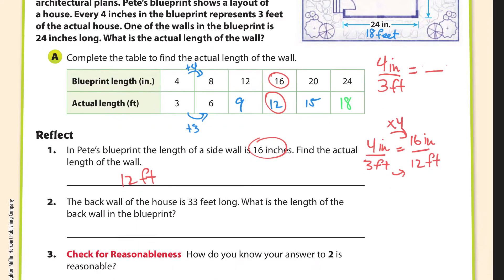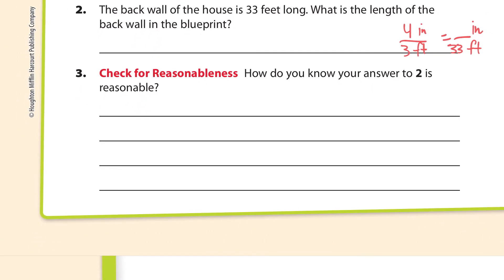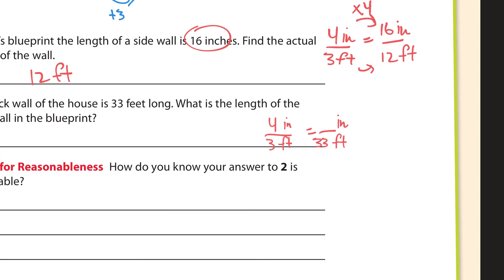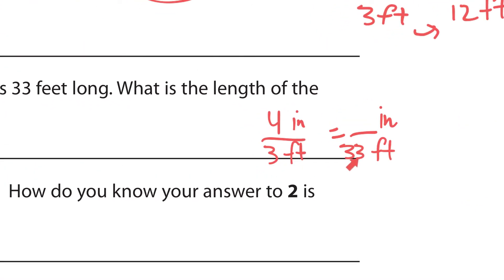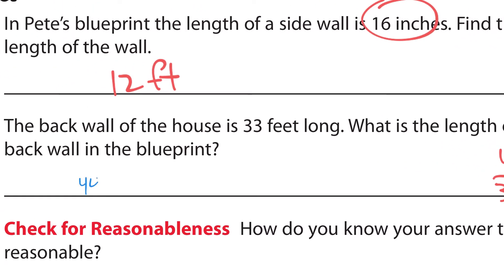Now we're going the other direction — the back wall of the house is 33 feet. Here they give me the actual length and I have to find the blueprint length. Using the same ratio, 4 inches is 3 feet: 3 times 11 is 33, so I multiply 4 times 11, which is 44 inches. So the back wall should be 44 inches in the blueprint.